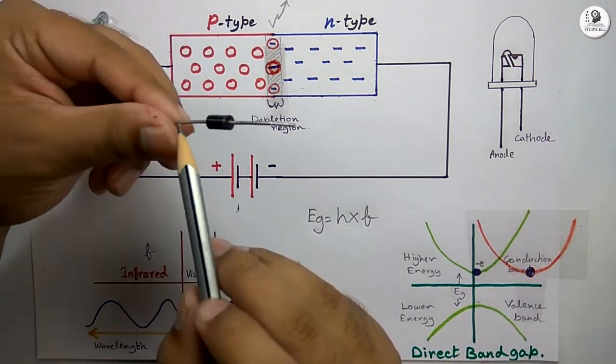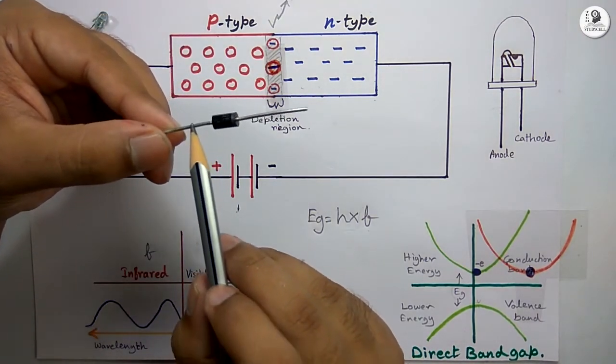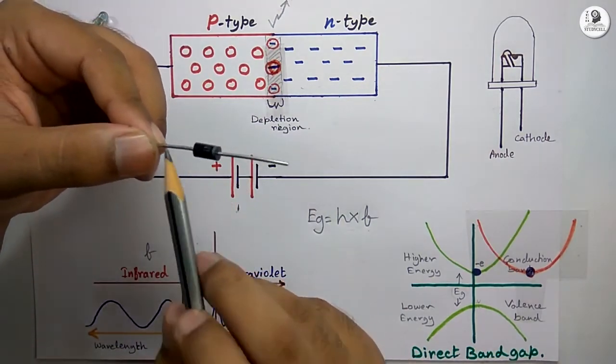Thus, if we apply a forward voltage to this PN junction diode, we cannot see any light glowing from this diode.